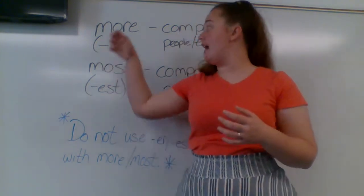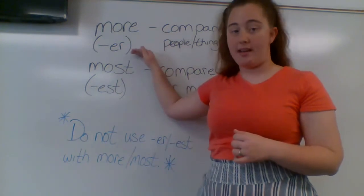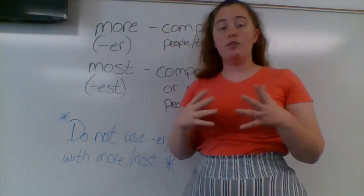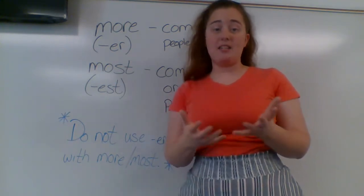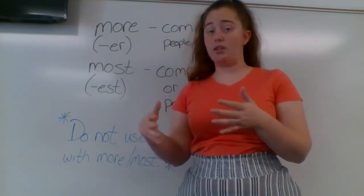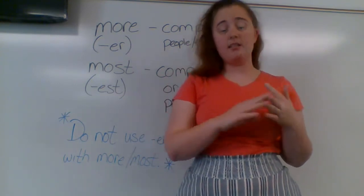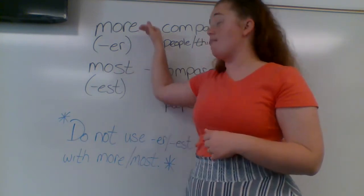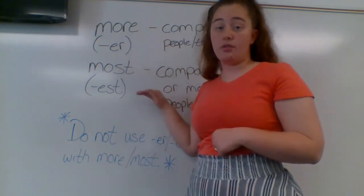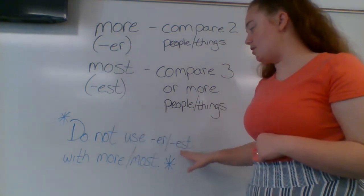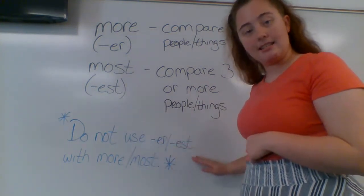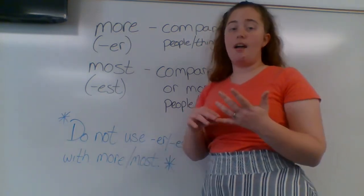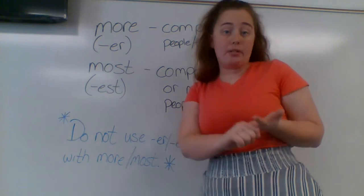As you can see behind me, I have 'more' with that ER ending and 'most' with that EST ending. Some words don't have that ER ending — like the word 'short.' I have short, shorter, shortest. But I don't say 'more short' or 'most short,' and I don't say 'more shorter' or 'most shortest.' Do not use that ER or EST ending together with 'more' or 'most.' So you don't say happy, more happier, most happiest.